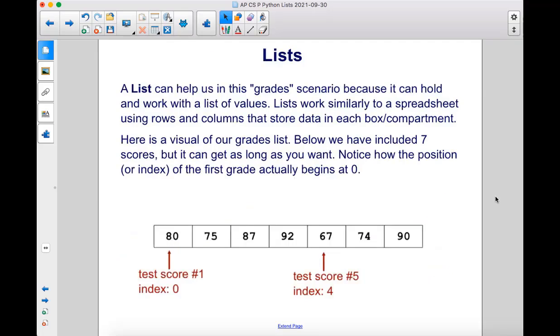A list can help us in this grades scenario because it can hold and work with a list of values. Lists work similarly to a spreadsheet, using rows and columns that store data in each box or compartment. Here's a visual of our grades list. Below, we have included seven scores, but it can get as long as you want. Notice how the position, or index, of the first grade actually begins at zero.